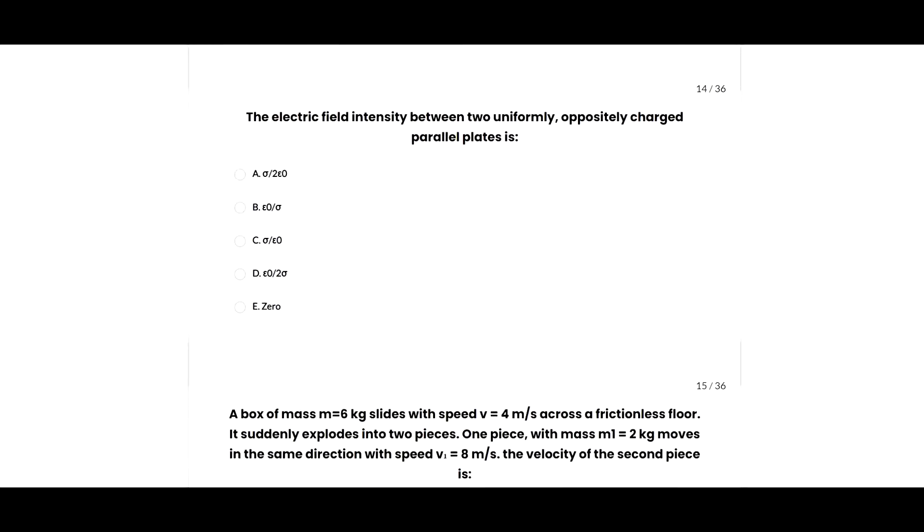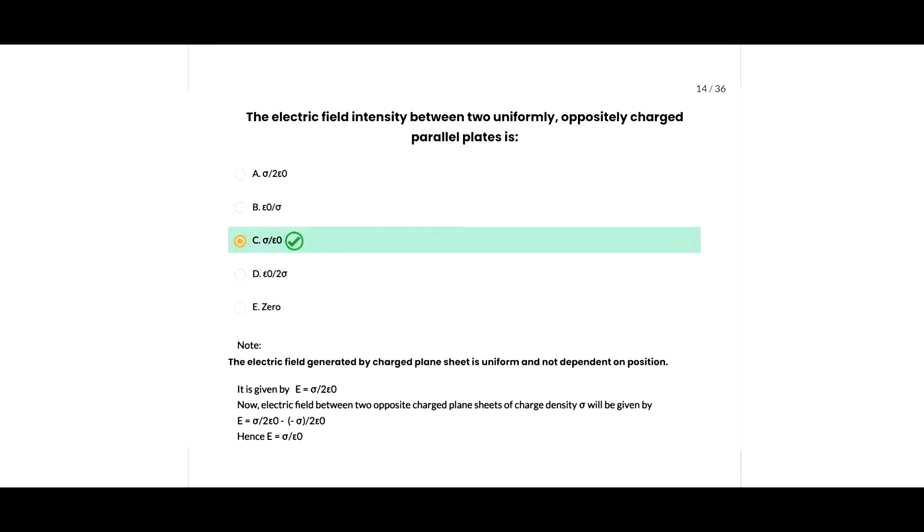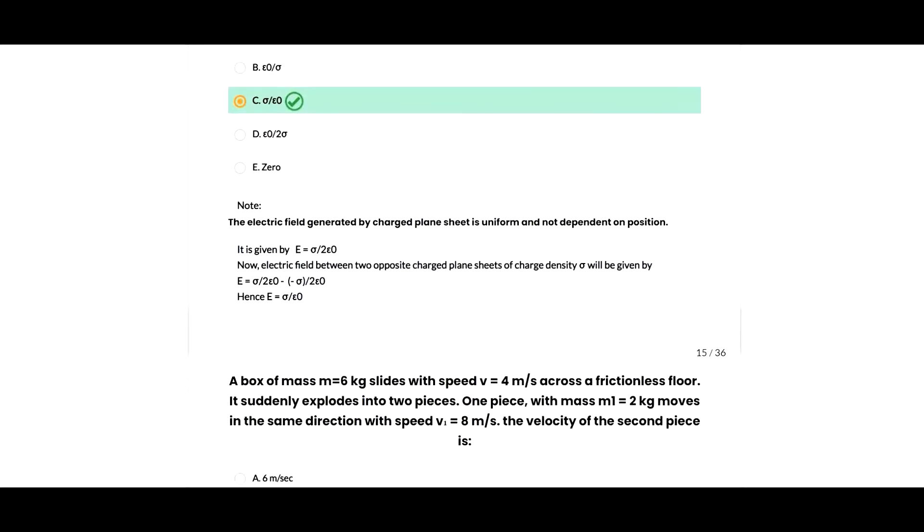Next question: the electric field intensity between two uniformly oppositely charged parallel plates will be given as sigma over epsilon naught. The electric field generated by a charged plane sheet is uniform and not dependent on position. It is given by E equals sigma over 2 epsilon naught. The electric field between two opposite charged plane sheets of charge density sigma will be E equals sigma over epsilon naught, so C option is correct.